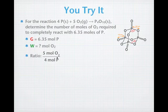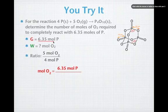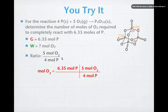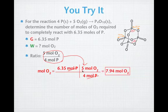Let's put together the calculation — pause and try it yourself. We start with 6.35 moles of phosphorus using the railroad track method. We then apply our mole ratio: 5 moles of oxygen over 4 moles of phosphorus. The moles of phosphorus cancel, leaving us with moles of oxygen. The final answer is 7.94 moles of oxygen.